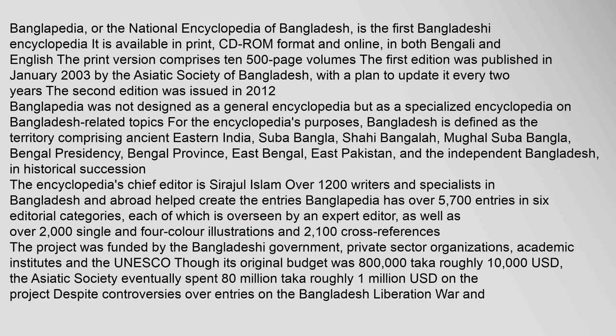Banglopedia, or the National Encyclopedia of Bangladesh, is the first Bangladeshi encyclopedia. It is available in print, CD-ROM format, and online, in both Bengali and English. The print version comprises 10 500-page volumes. The first edition was published in January 2003 by the Asiatic Society of Bangladesh, with a plan to update it every two years. The second edition was issued in 2012.